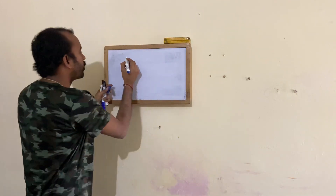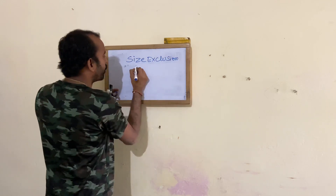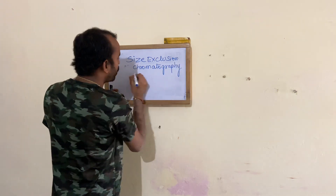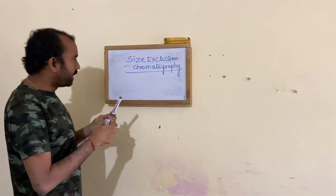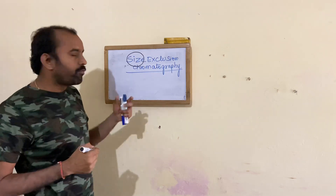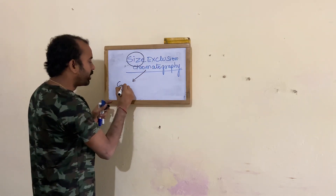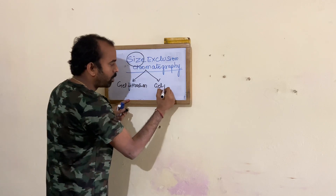Welcome to today's lecture. I am going to deal with a new topic called size exclusion chromatography. In size exclusion chromatography, we are separating the analytes based upon size — that is the fundamental property. Size exclusion chromatography is of two types: one is gel filtration and the other one is gel permeation.